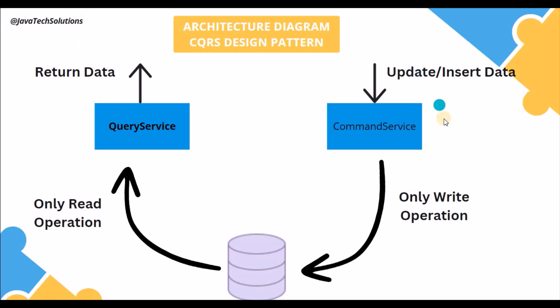I hope it's clear what the CQRS design pattern is and where to use it. I will create one microservice using the latest version of Spring Boot with Java 17, using the H2 database. Let's create the microservice and see how it looks in a real example.